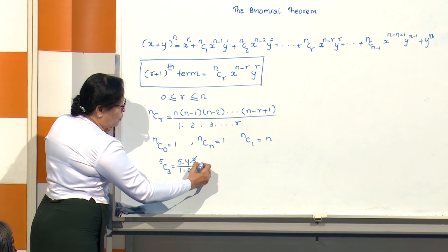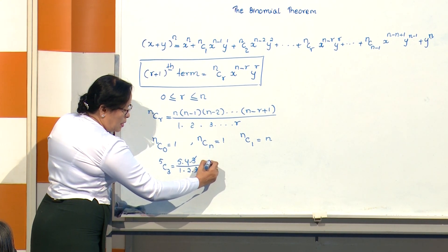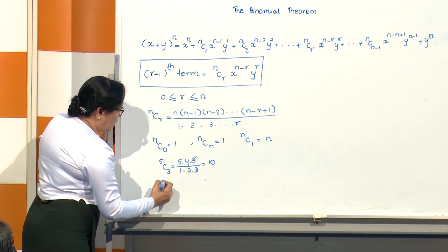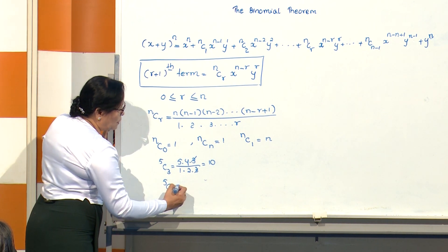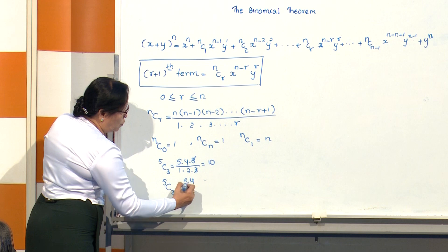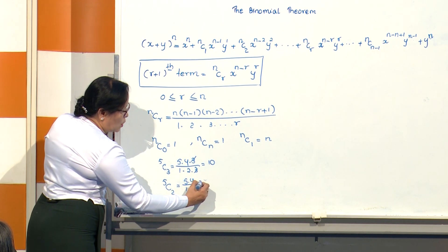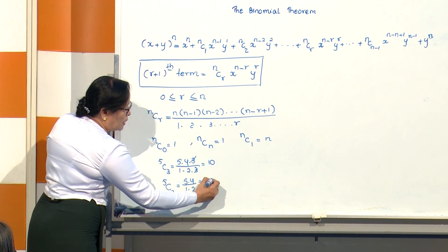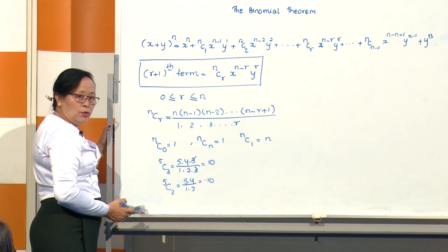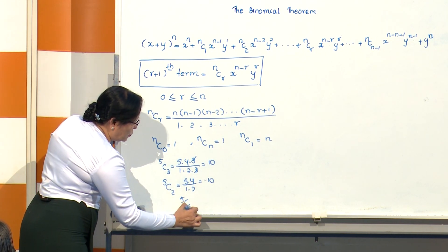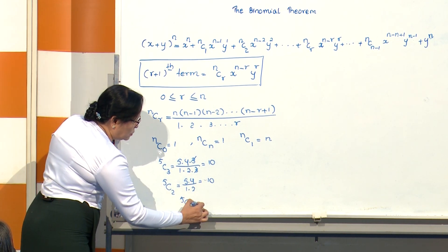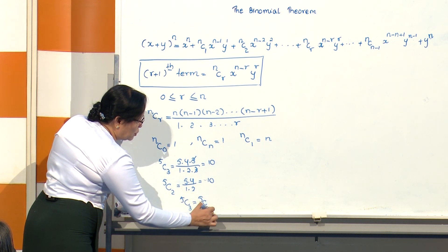How many does that give? That equals 10. Also, 5C2 equals 5 times 4, divided by 1 times 2, which also equals 10.